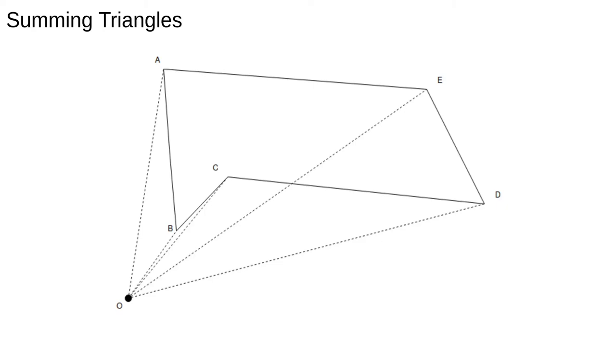Shapely calculates the area of a polygon using the so-called shoelace formula. This works by choosing an origin O and computing the areas of the triangles formed with each side of the polygon and O.